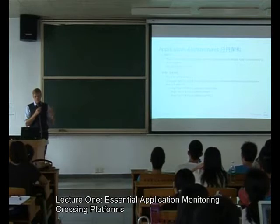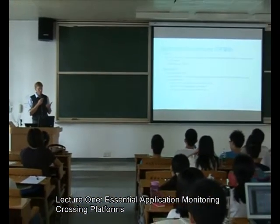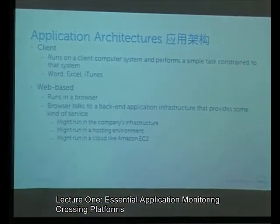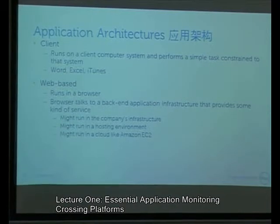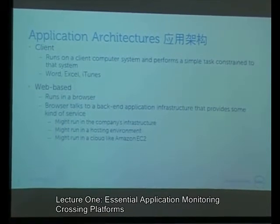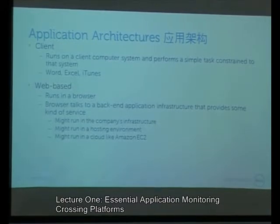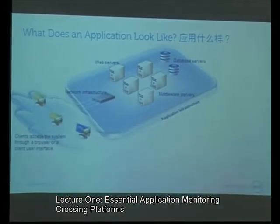There are lots of different architectures. You can have a simple client architecture — an application that just runs on one machine, like Microsoft Word or iTunes. The ones we care about most are web-based ones that run in a browser on a machine or phone, where the browser talks to a back-end application infrastructure and serves HTML and JavaScript to a client. Where that runs is very interesting — it might be running inside the company's infrastructure, in a hosting environment, in a cloud, or in all three at the same time, depending on time of year or application load.